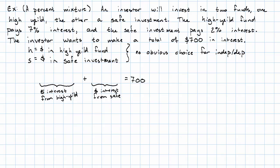The interest from the high-yield investment is 7% of H, converting that percent to a decimal before I do any arithmetic to it. The interest from the safe investment is 2% of S, again converting that percent to a decimal before I do anything to it. And there's my equation.